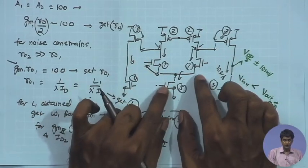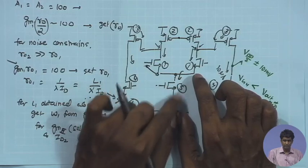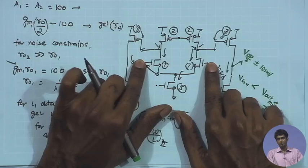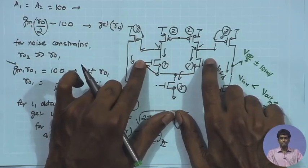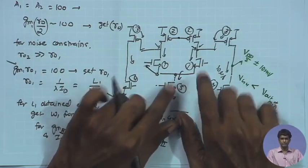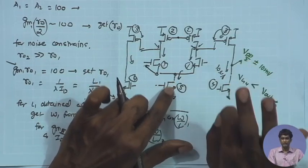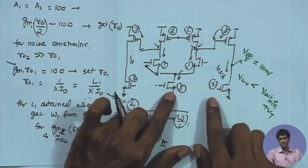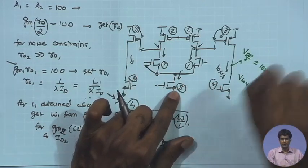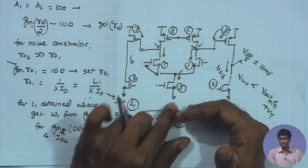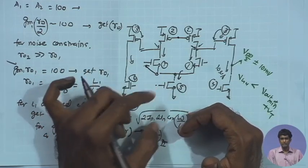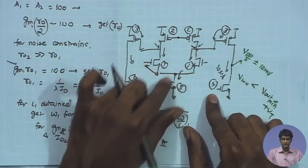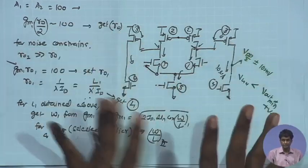For M5, the saturation condition is an important constraint because the DC potential at the input is fixed and the input range is not an issue. I just need to ensure M5 always remains in saturation, so I must fix W/L to the required minimum. Second, the L value of M5 depends on the CMRR requirement, so we need a certain minimum L. Using a cascode for M5 relaxes the constraint on L and ro while still achieving good CMRR.